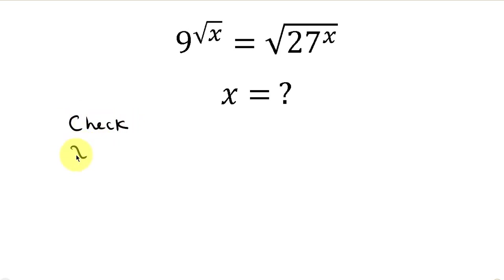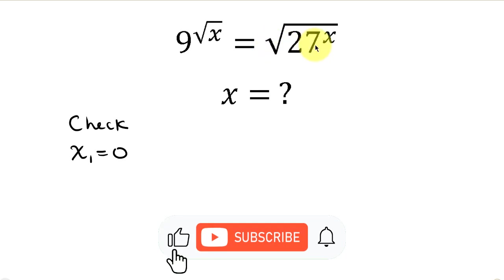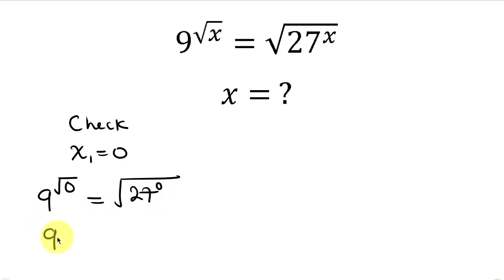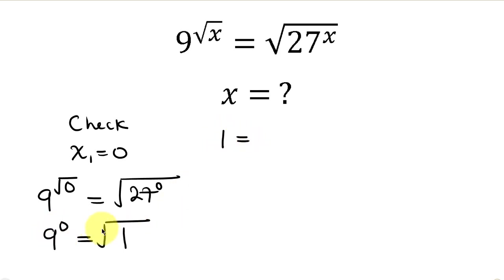Let's check our solutions. First, when x equals 0: the left hand side is 9 to the square root of 0, which is 9 to the 0, giving 1. The right hand side is the square root of 27 to the 0 — 27 to the 0 is 1, and the square root of 1 is also 1. Both sides equal 1, so x equals 0 is a valid solution.